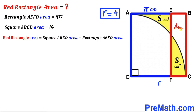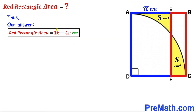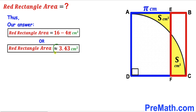Here is our final step. Recalling the equation: red rectangle area = square ABCD area minus rectangle AEFD area. Substituting the values: 16 minus 4π. Therefore the area of the red rectangle is (16 − 4π) centimeter square, which is approximately 3.43 centimeter square. That's our final answer. Thanks for watching — please don't forget to subscribe to my channel for more exciting videos!